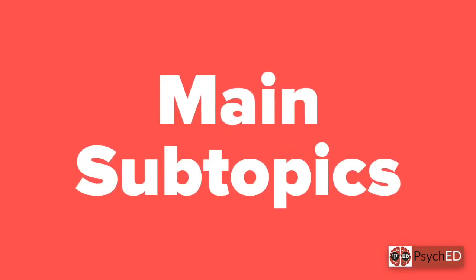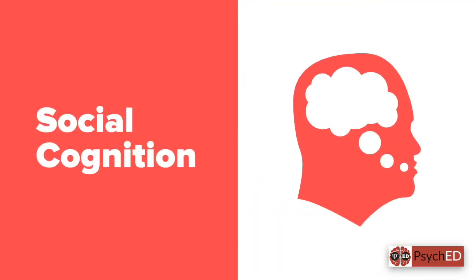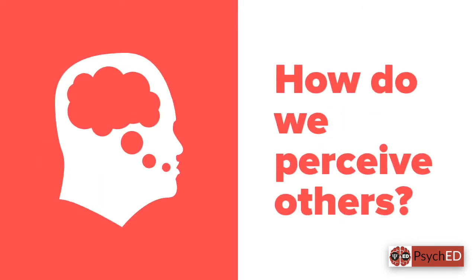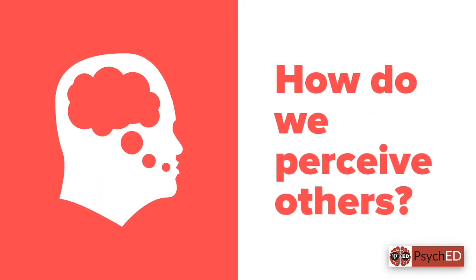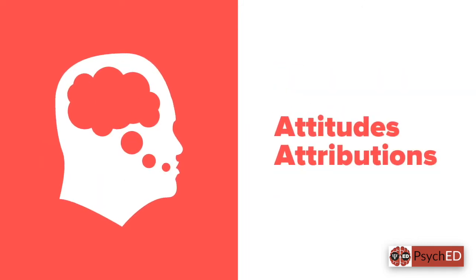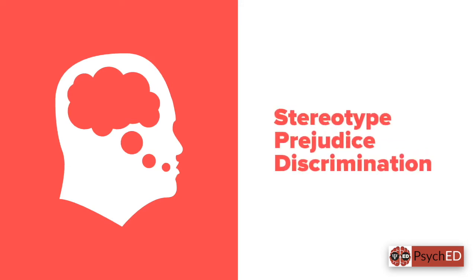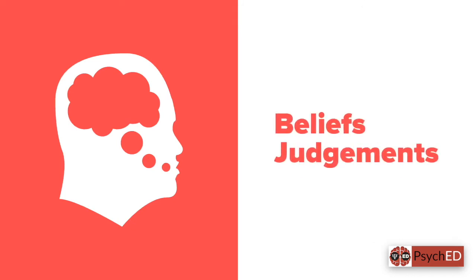Let's look at some main subtopics of social psychology. The first one is social cognition, in which they try to answer questions such as: How do you perceive others? How do we form and change attitudes and attributions? What are stereotypes, prejudice, and discrimination, and how do they evolve in relation to each other? And how are our beliefs and judgments formed, and how do they affect our behavior?